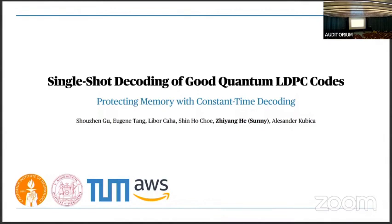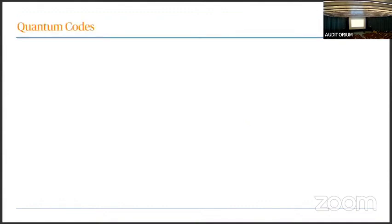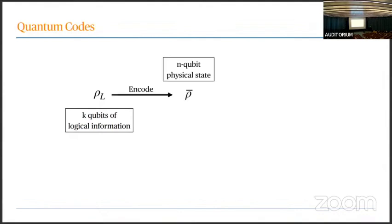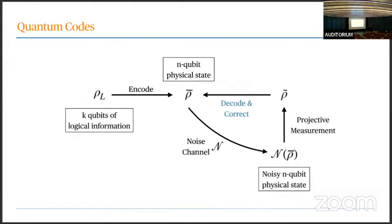There are really a lot of words in the title, each carrying quite some meaning. The structure of today's talk is that we'll go over some of these keywords and at the end we'll be able to put together a complete picture. Let's start with quantum codes. The high-level idea is: we take k qubits of logical information encoded into n qubits of physical information. This physical information goes through some noise channel, and given this noisy state, our goal is to do projective measurements — stabilizer measurements — and correct back to the ideal physical state.